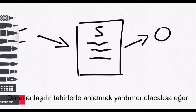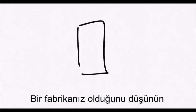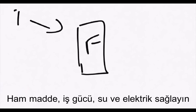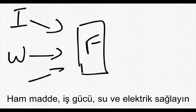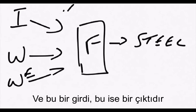And it probably helps to think of software in really old school terms. If you had a factory and you were putting in things like iron, you were putting workers in there, you were putting water and electricity. Well, what comes out of it? You would get steel. So this is an input and this is an output.